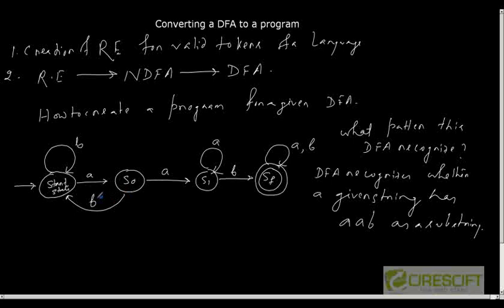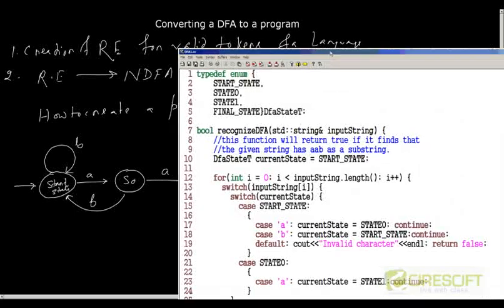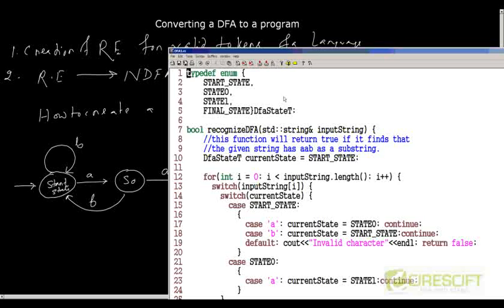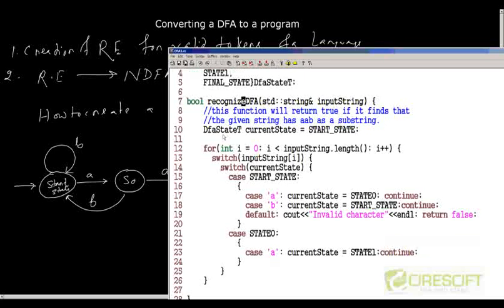Now let us try to write a program to implement this DFA. So what I have done is I have created a small C++ program. Now you can see here how I have started. I have enumerated, I have created an enum type which takes care of all possible states. So currently I have a starting state, state 0, state 1 and the final state for the given problem. And I have made it as a typedef as a DFA state D.